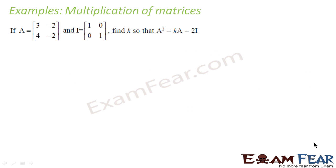A² = kA - 2I and we need to find the value of k. Very simple — we define A² first. If we have A², then we will have the equation A² = kA - 2I. We can perform normal subtraction and addition, get two equations on left-hand side and right-hand side, and find the value of k. So let's find A² first.